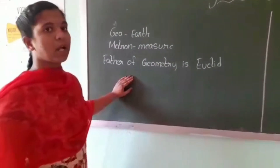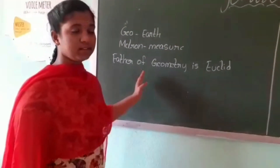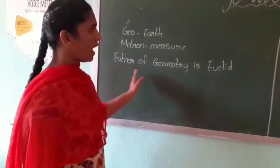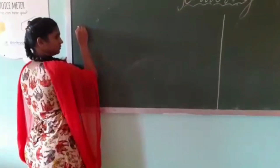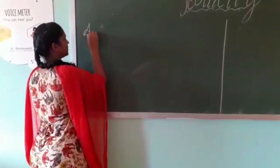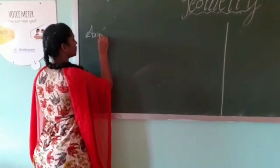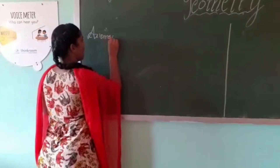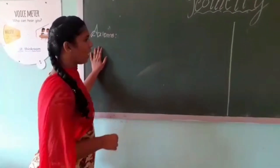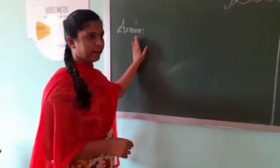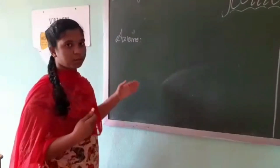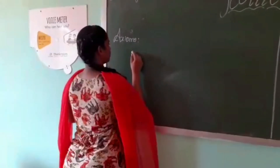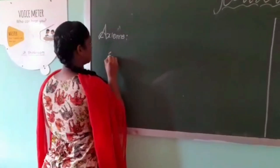In his book he described about axioms, postulates, and theorems. Axioms are the basic facts which were taken for granted without proof. That means axioms are universal truths but we cannot prove them. Let us see some examples of axioms.